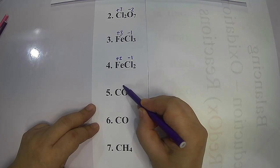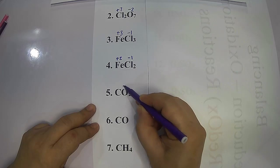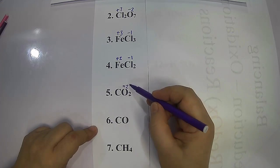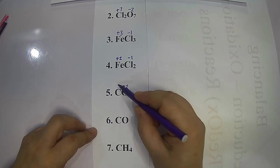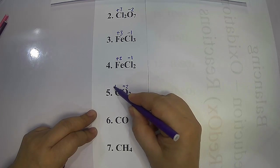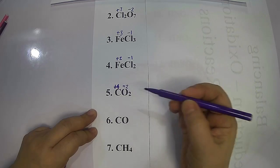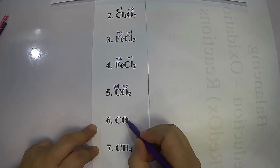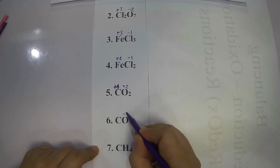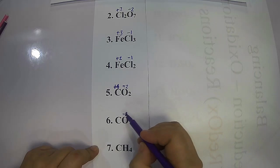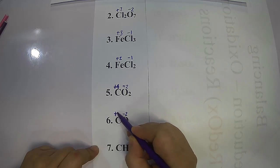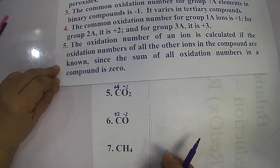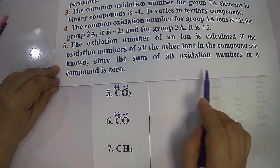Since the sum of all oxidation numbers in a compound equals zero, carbon in CO₂ must be positive four. For carbon monoxide (CO), oxygen is always negative two except in peroxides, so carbon must be positive two to satisfy the rule that the sum of all oxidation numbers equals zero.